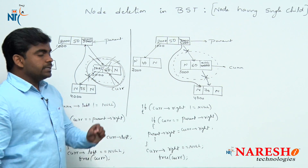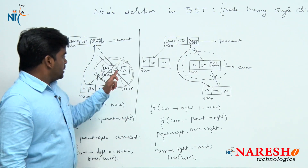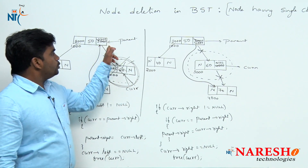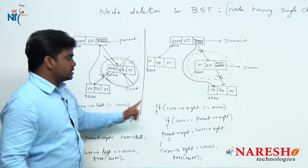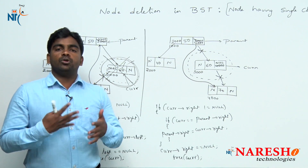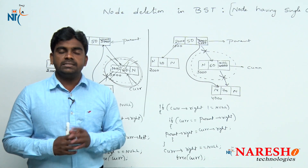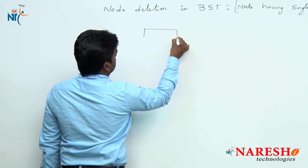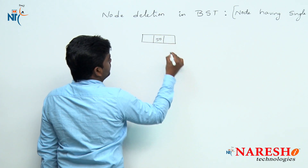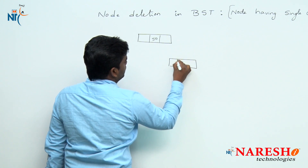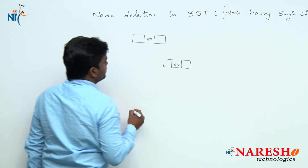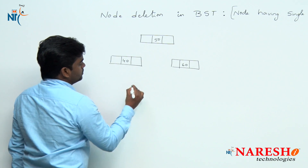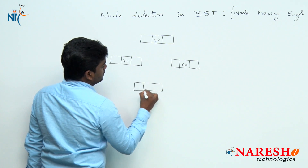This is how to delete a node having one child where the node is connected to parent's right side. These are two possibilities and two more possibilities are there. Now look at this - left side suppose here it is 40 and here it is 45.